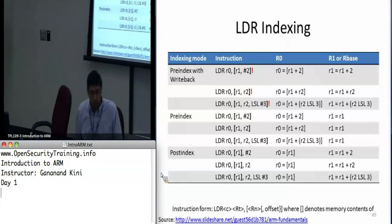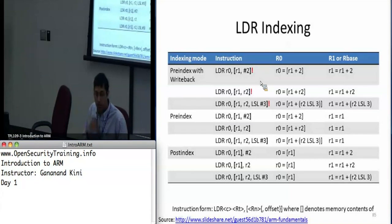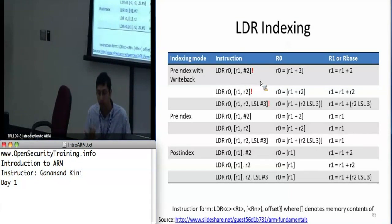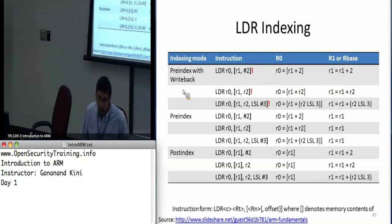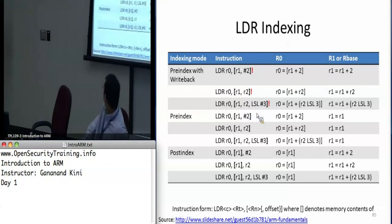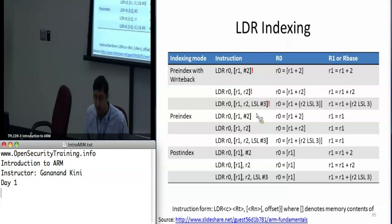Here's an example of pre-index with writeback. If you do LDR R0, [R1, #2]!, it adds 2 to R1 and stores the value at that address into R0. Then it also updates R1 with R1 plus 2. You can also include barrel shifts in your addressing operation, calculating an address using the barrel shifter — chances are it will be a power of 2 — and you can update the register again this way.